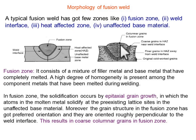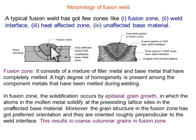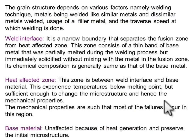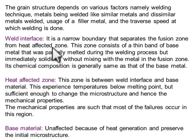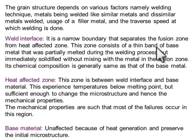If we observe under a microscope, we will see this kind of grain structure in the fusion zone. The heat affected zone is the second region after the fusion zone, with the weld interface in between. The weld interface is a narrow boundary that separates the fusion zone, where complete melting is happening, from the heat affected zone, where melting is not happening.